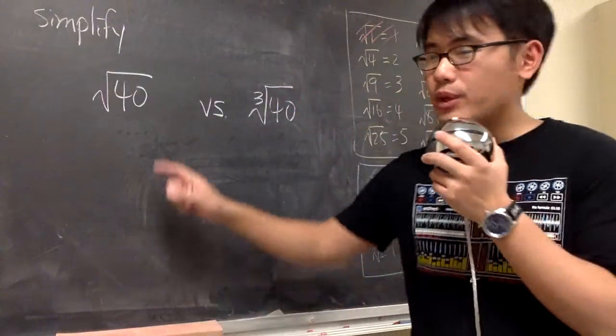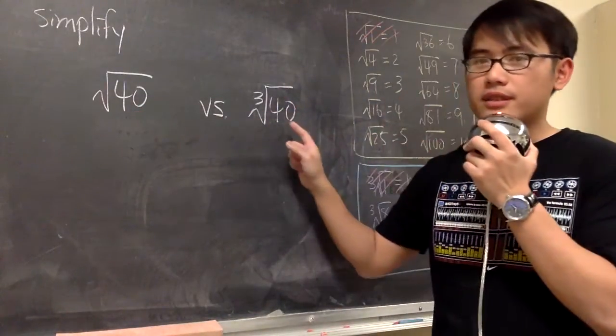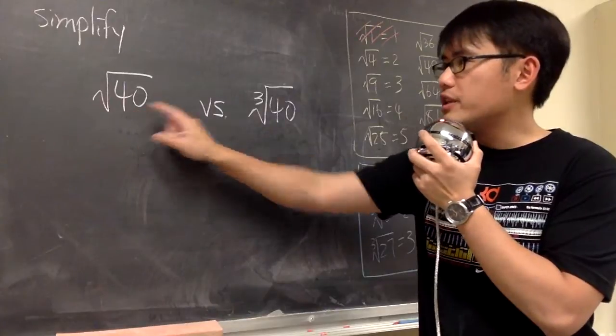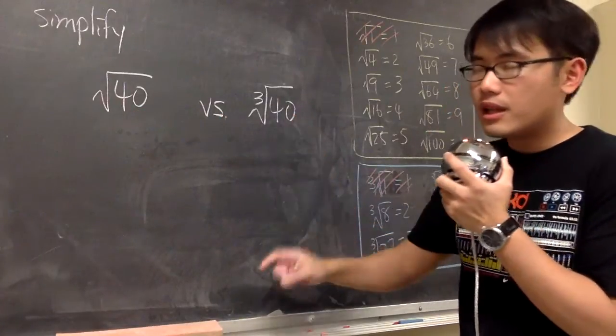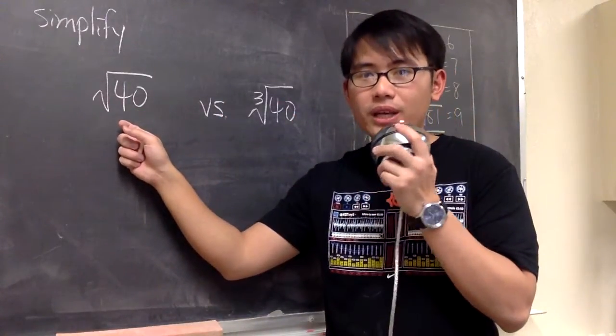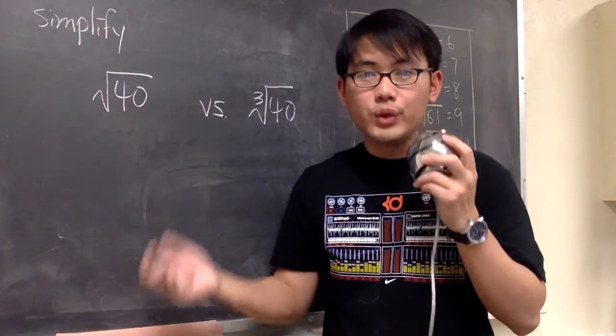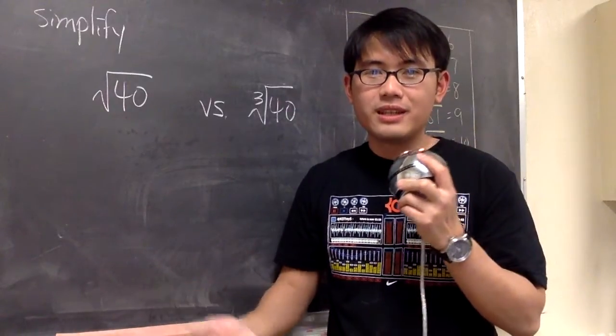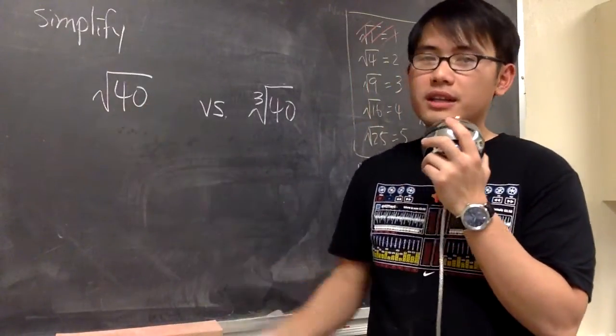Let me show you a strategy on how we can simplify a square root versus a cube root. Let's do a square root versus the cube root of 40. Begin with this one. How can we simplify a square root of 40? Do we know what square root of 40 is? We don't, because 40 is not a perfect square.